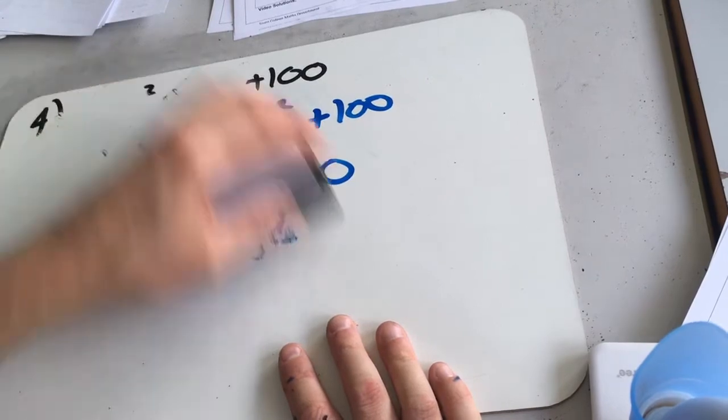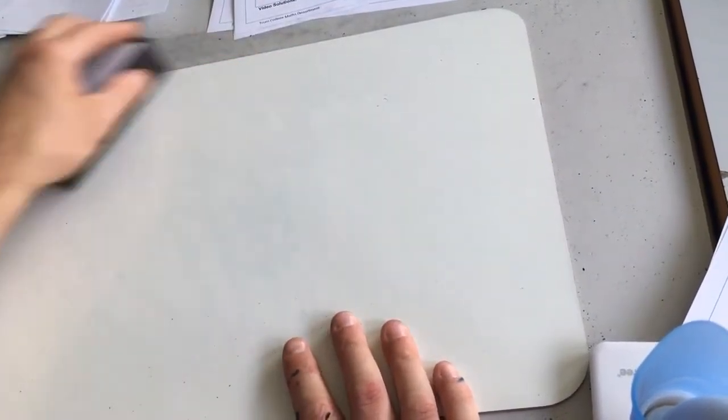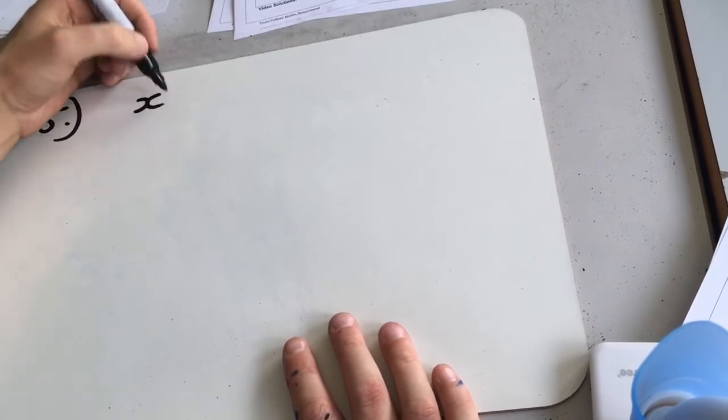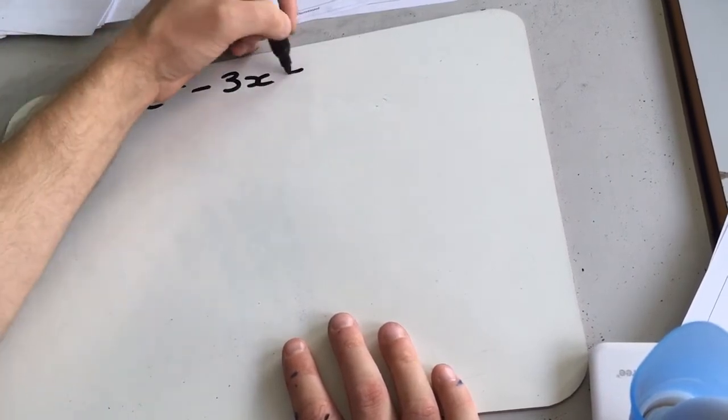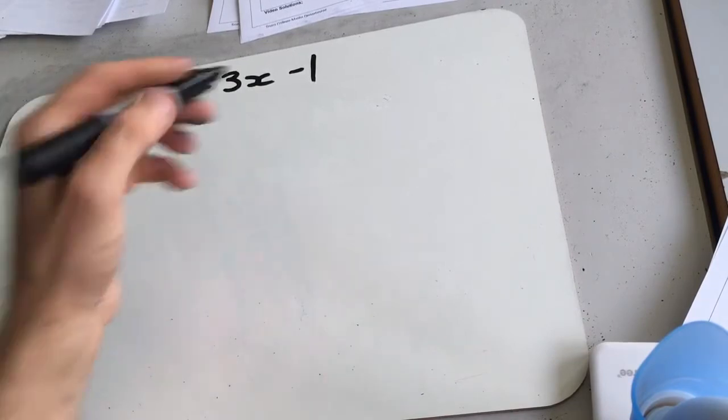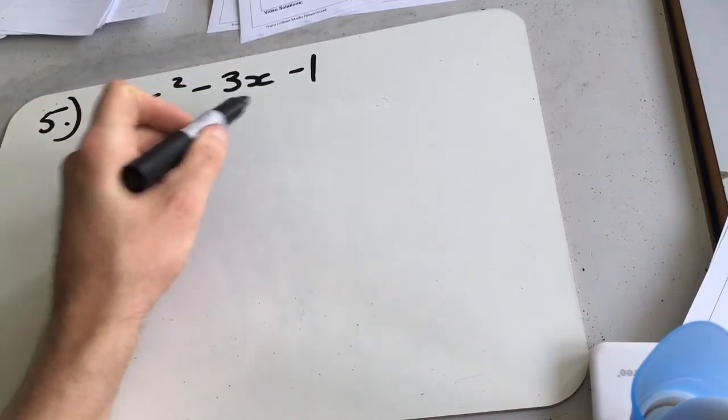Okay, question 5 is still reasonably straightforward. x squared minus 3x minus 1. So a little bit harder because it's not an even number. We've got to deal with some fractions now. We're still going to leave the 1 on its own and only look at this bit.